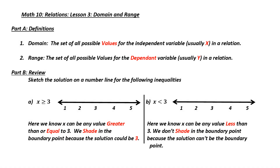Relations, Lesson 3: Domain and Range. First, we need to define what is domain and what is range. Domain is the set of all possible values for the independent variable, which is usually x. Range is a listing of all possible values for the dependent variable, which is usually y.